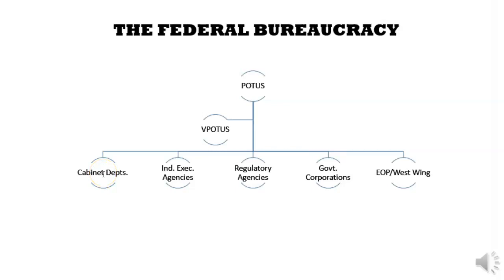The 15 cabinet departments — like the Department of Labor, the Department of Defense, the Department of Treasury. Then you have independent executive agencies like NASA. Then you have regulatory agencies like the FDA and the EPA. Then you have government corporations like the Post Office, and then you have the West Wing of the White House. All of these make up the bureaucracy as we know it.